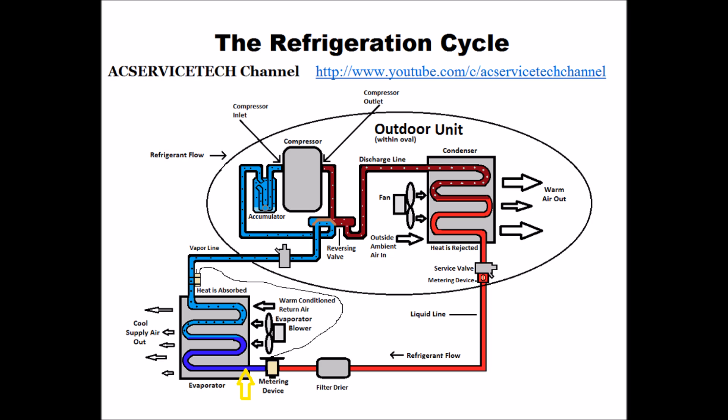It then starts to absorb heat from the house. It continues to absorb heat until it turns into a saturated state where liquid and vapor both exist. That's where it's able to store most of the heat it's absorbing from the house during that phase change from liquid to vapor. It then turns into a complete vapor and continues to absorb heat until it comes out of the evaporator coil.